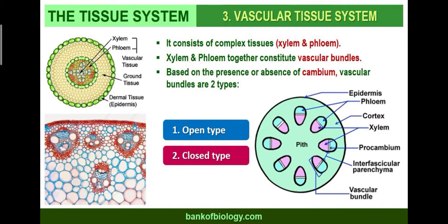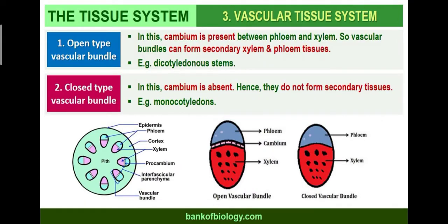Third is the vascular tissue system, which consists of complex tissues — xylem and phloem — that together constitute the vascular bundle. Based on the presence or absence of cambium, vascular bundles are of two types: open type and closed type. In open-type vascular bundles, cambium is present between phloem and xylem, so secondary xylem and phloem tissue can form. This is seen in dicot stems.